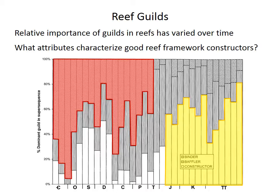And what you see is that the binder guild, highlighted in red in the Paleozoic, was really dominant. In some cases, 80 or 90% of the reefs were dominated by binders.